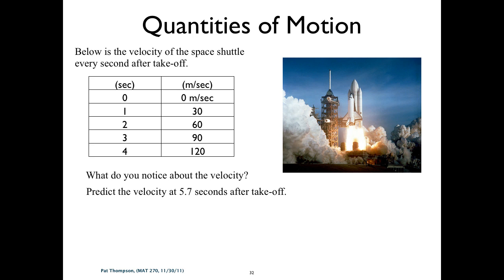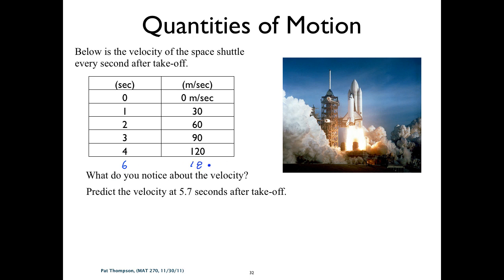What do you think it would be at 6 seconds? 180. Can we get something a little more accurate than that? Dakota says 5.7 times 30. Anyone think of it a different way? Looking at 5 — it's 150 — so 150 plus 30 times 0.7.